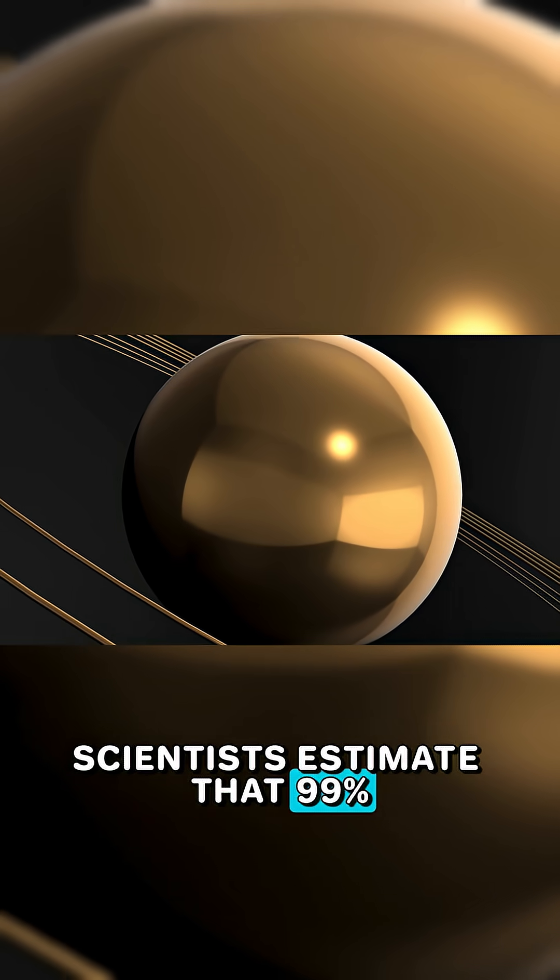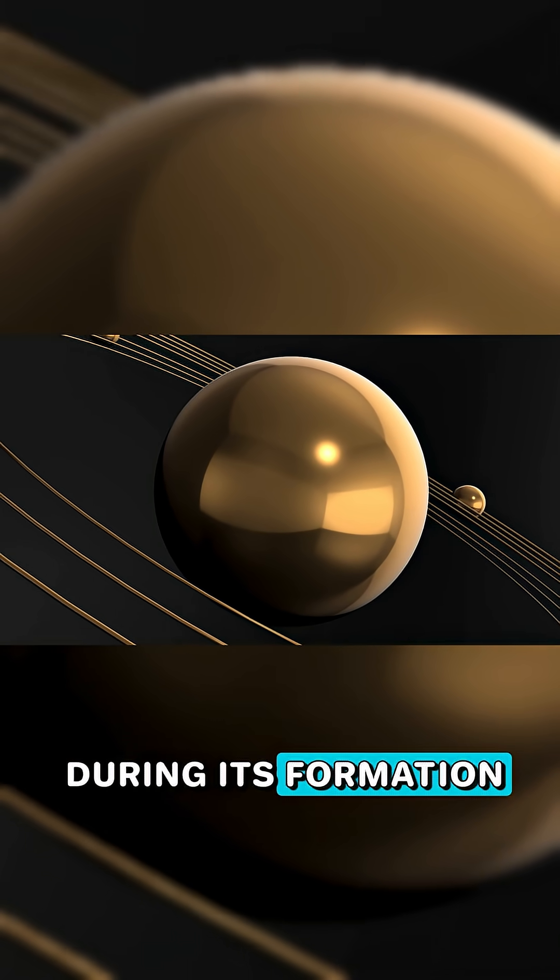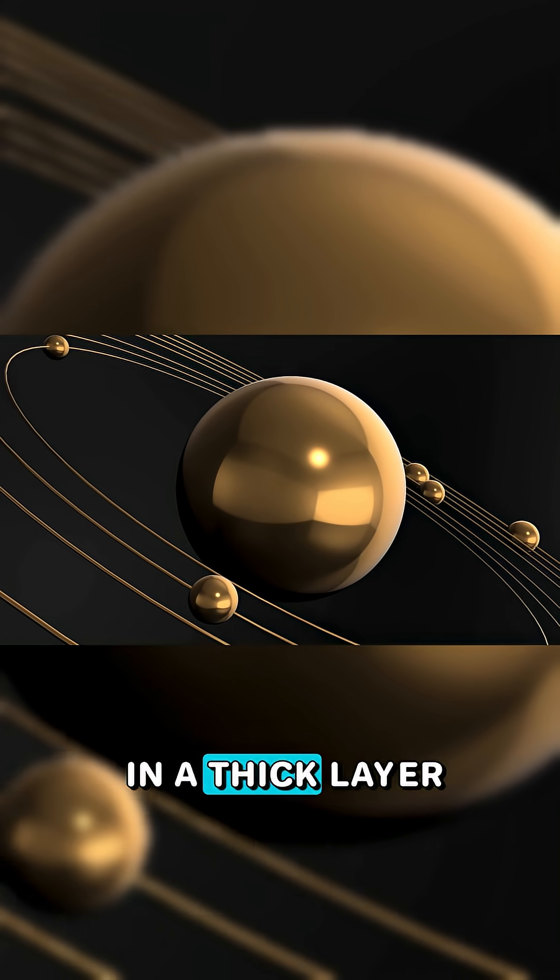Scientists estimate that 99% of all the planet's gold sank into the core during its formation, meaning there's enough gold down there to cover Earth's surface in a thick layer of it.